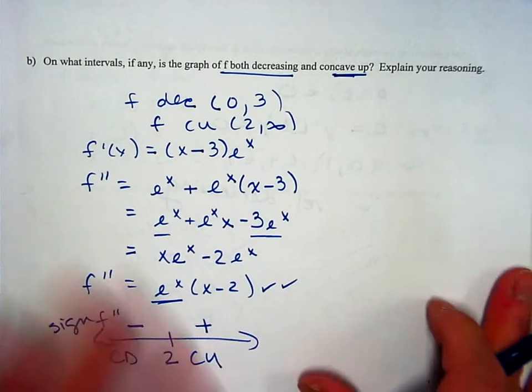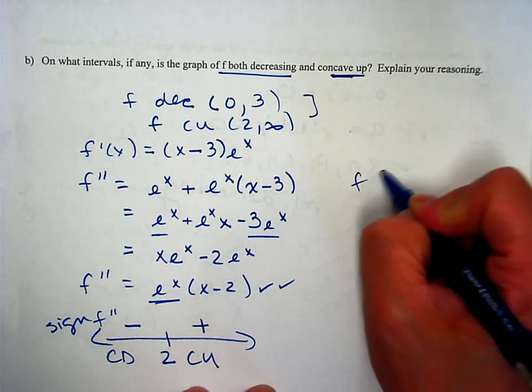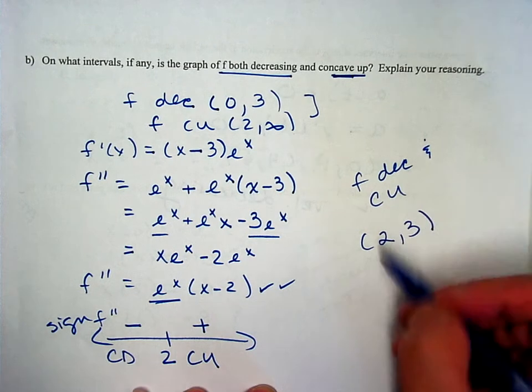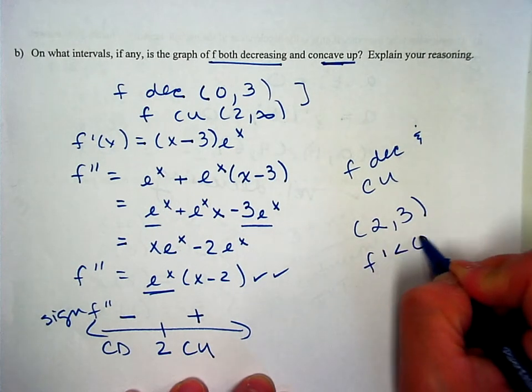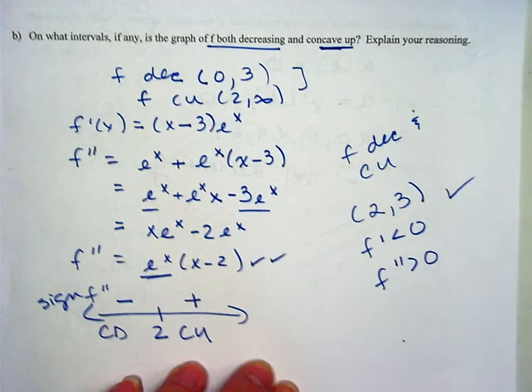So the only place where they're both decreasing and concave up would be from 2 to 3. And your reasoning is because f prime is less than 0 and f double prime is greater than 0. So this would be your last point here. It is a three-point question.